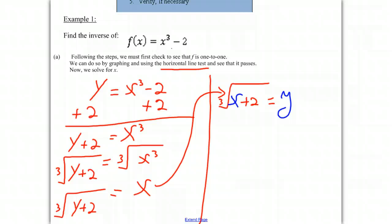Okay, welcome back. And our next step is very simple. We're simply going to replace y with our notation for an inverse. So on the left side, we have the cube root of x + 2. And on the right side, we're going to replace our y with our notation for the inverse.